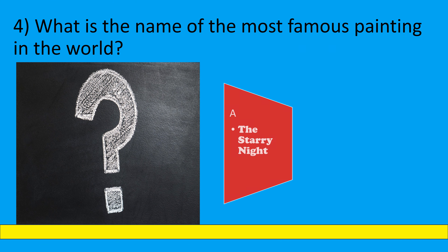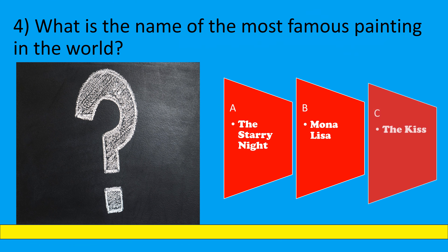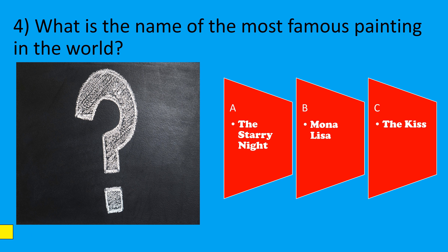What is the name of the most famous painting in the world? A: The Starry Night, B: Mona Lisa, C: The Kiss. The correct option is B, Mona Lisa.